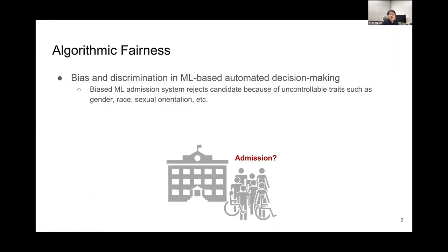Nowadays, machine learning algorithms are being widely used for many kinds of applications which are automatically making decisions. So researchers have raised concerns about the bias and the discriminations in machine learning algorithms. For example, a biased machine learning college admission system can reject a candidate because of uncontrollable traits such as gender and race. So we need to have some measure for the fairness of machine learning models.